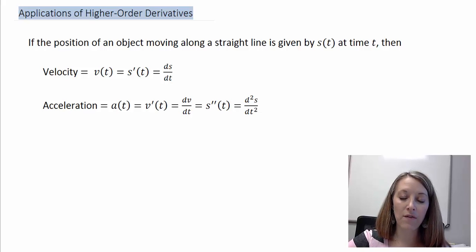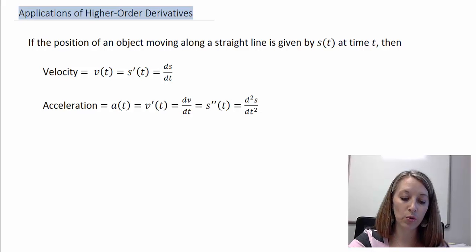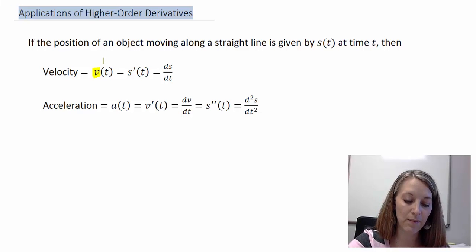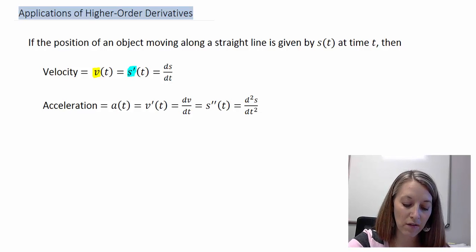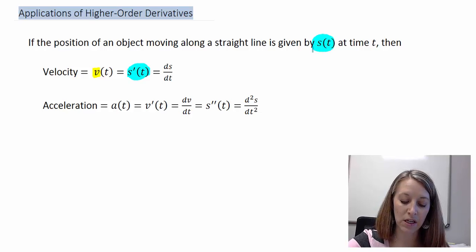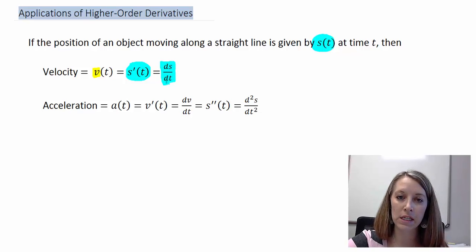If the position of an object moving along a straight line is given by the function s of t, where t stands for time, then we should already know that the first derivative gives us velocity. We label it v of t, and we get the velocity equation from the derivative of s of t — written as s prime of t, or ds/dt.